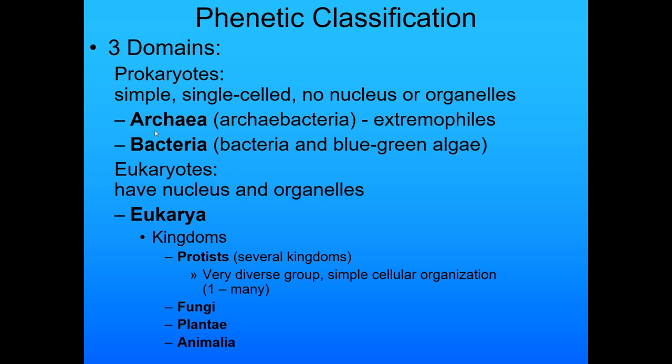Two of those are prokaryotic domains — simple single-celled organisms that have no nucleus or organelles. There are the archaea, or extremophiles, and then the bacteria, which include both the bacteria and the blue-green algae. We used to lump those together because they're all small and microscopic, but as we looked at their DNA, we realized they are as widely differentiated between them as we are from them. So they're a much larger group than we ever thought.